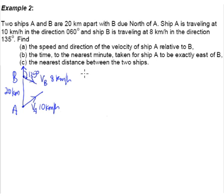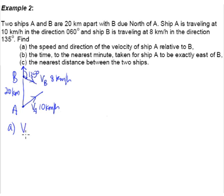Part A asks us to find the velocity of A relative to B. It's similar to what we have seen in Example 1. We're not going to use the animation anymore, so we're just going to quickly go through doing this the way we will do in the exam. Since we're looking for the velocity of A relative to B, it means we're looking for the velocity of A minus the velocity of B. We have to first draw the vector diagram.